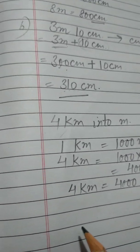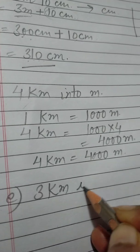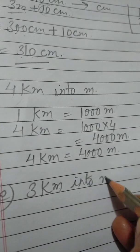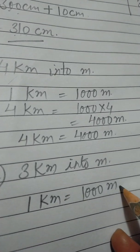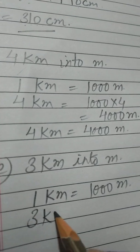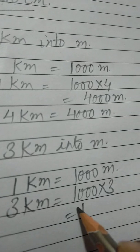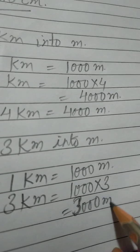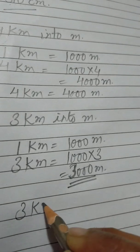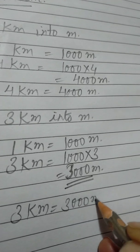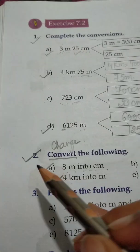Part e: the question is 3 kilometer — we have to convert this into meters. 1 kilometer equals 1000 meters, so 3 kilometer equals 1000 multiplied by 3, which is 3000 meters. So we can write 3 kilometer is equal to 3000 meters.